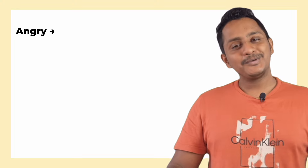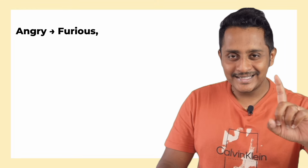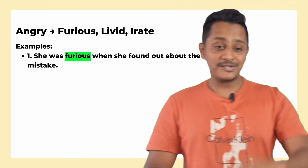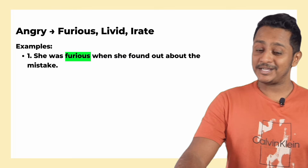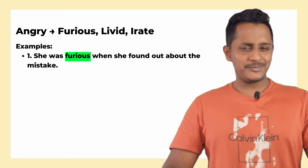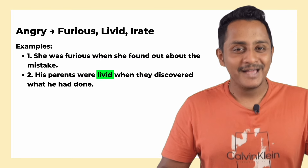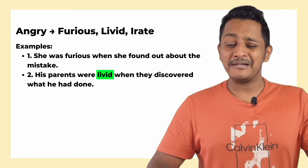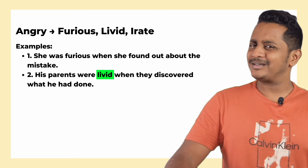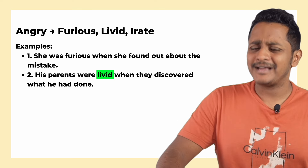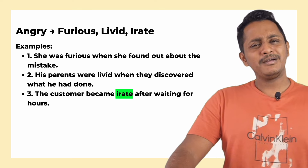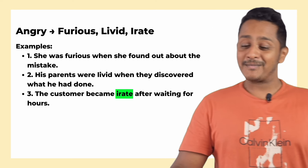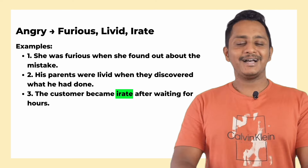The last word is 'angry.' Alternatives are: furious, livid, and irate. For example, instead of 'she was angry when she found out about the mistake,' say 'she was furious.' Instead of 'his parents were angry when they discovered what he had done,' say 'his parents were livid.' Instead of 'the customer became very angry after waiting for hours,' say 'the customer became irate after waiting for hours.'